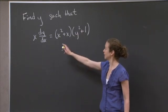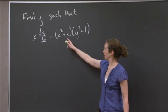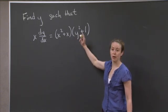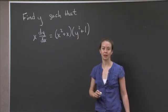So we just want to find y such that x times dy/dx is equal to x squared plus x times y squared plus 1. I'll give you a minute to think about it, and then I'll be back.